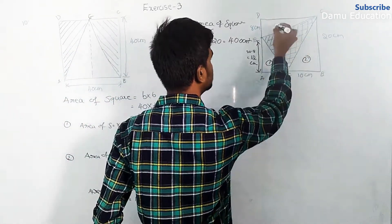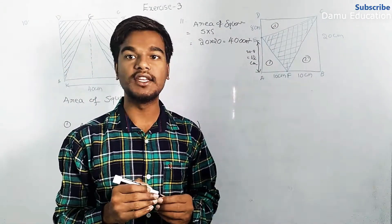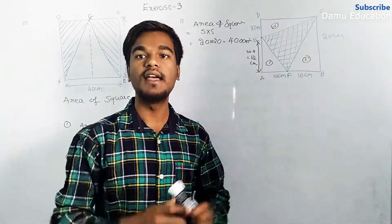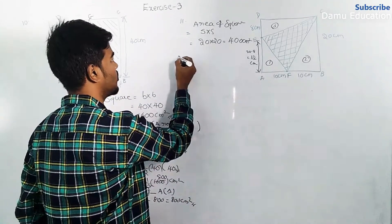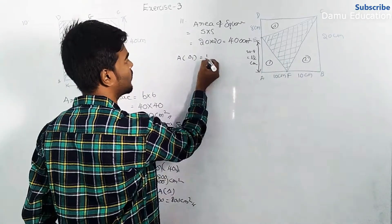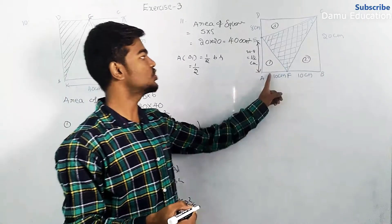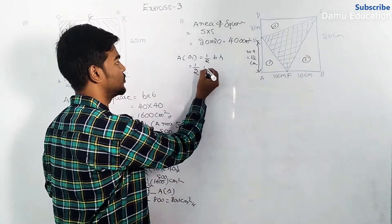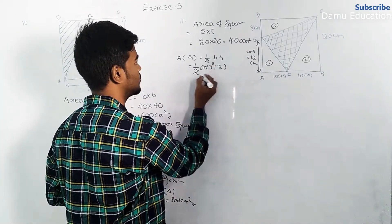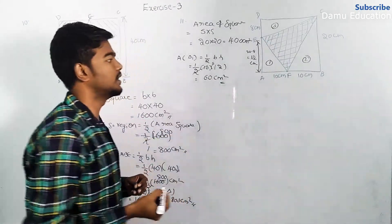We divide the figure into three triangles, calculate all their areas, add them, and subtract the total from the area of the square. Area of triangle 1 equals half into base into height — base is 10 centimeter and height is 12 — so half into 10 into 12 equals 60 centimeter square.